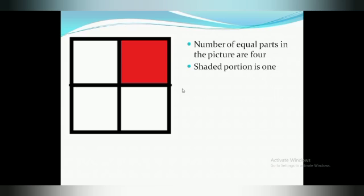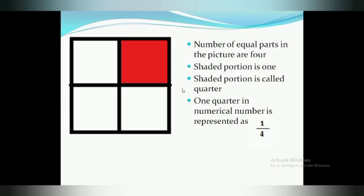Only one portion from the four equal parts is shaded. That shaded part is called a quarter. One quarter in numerical form is represented as one upon four.